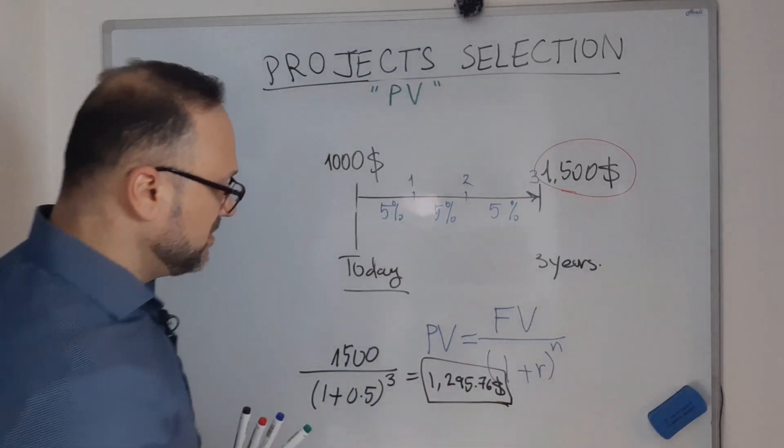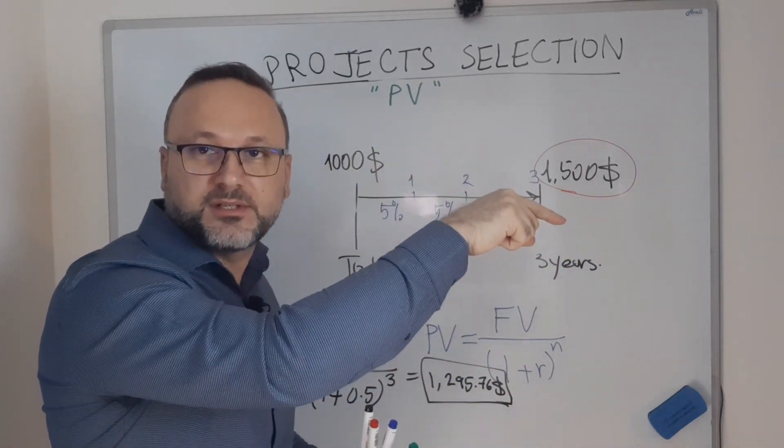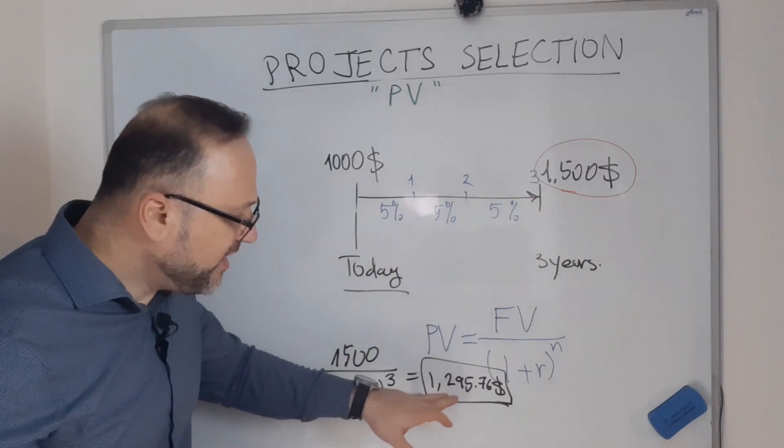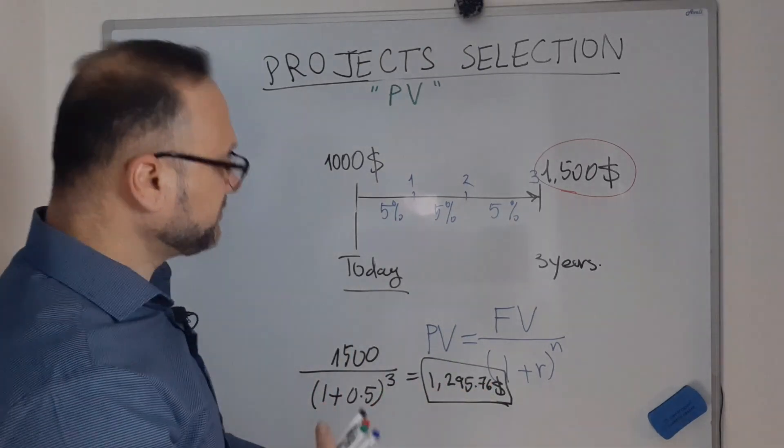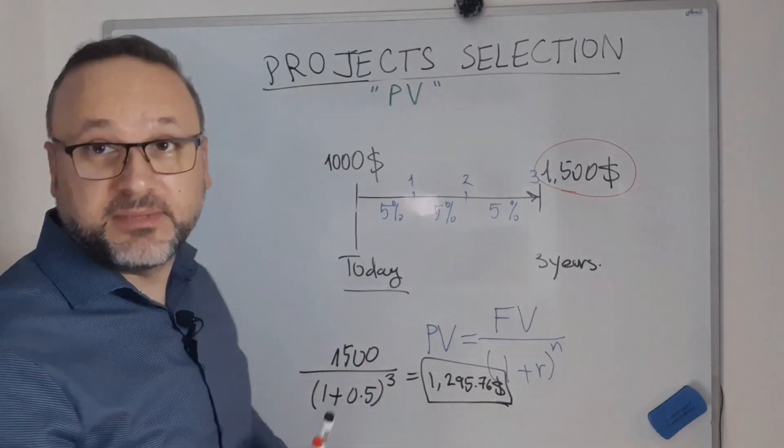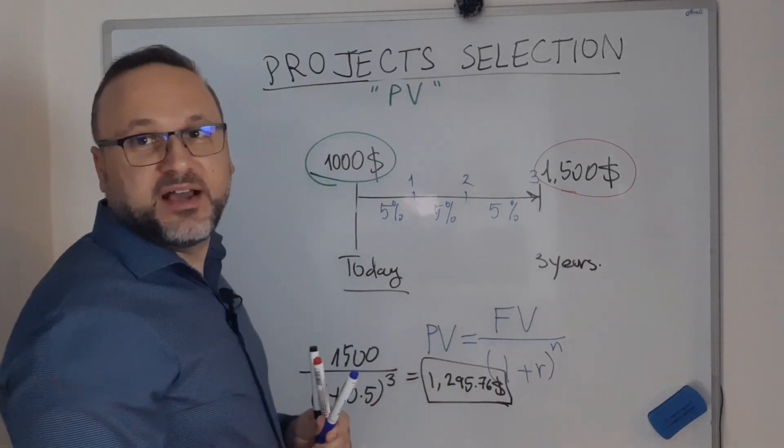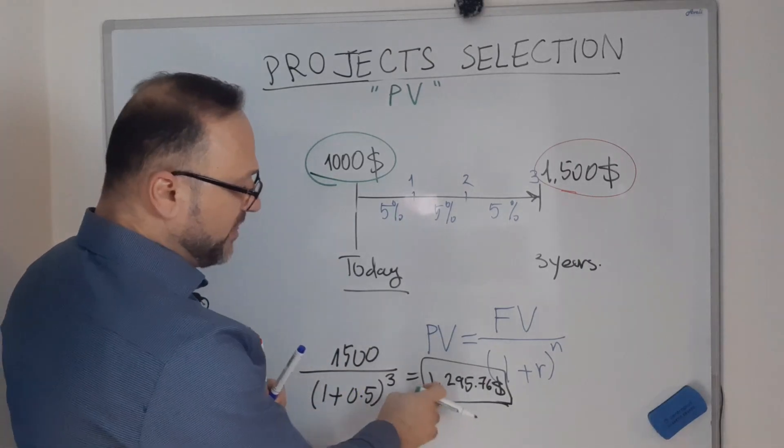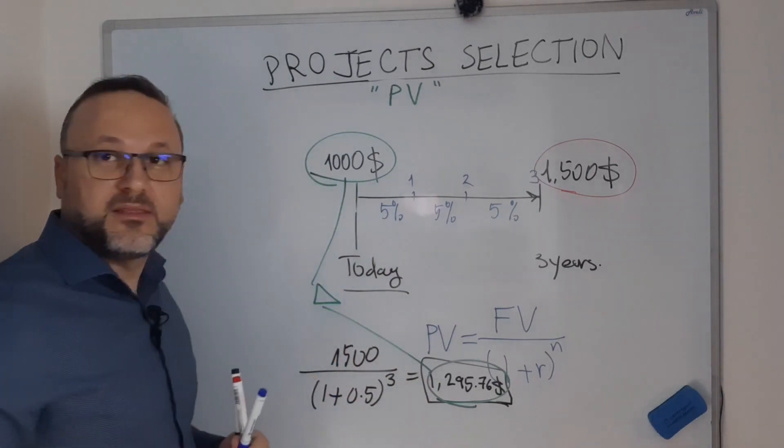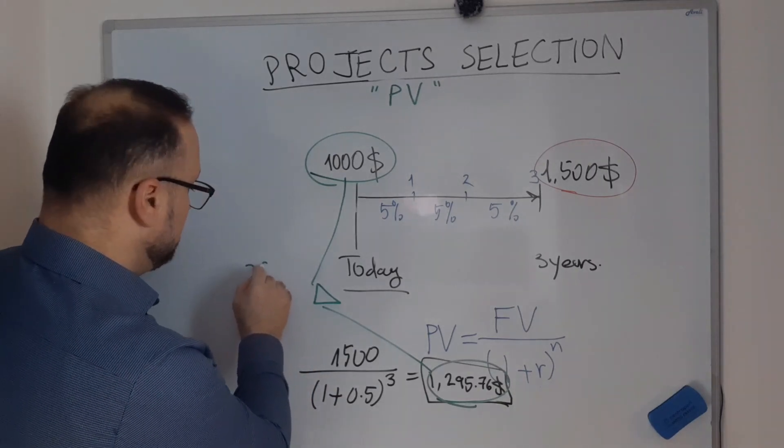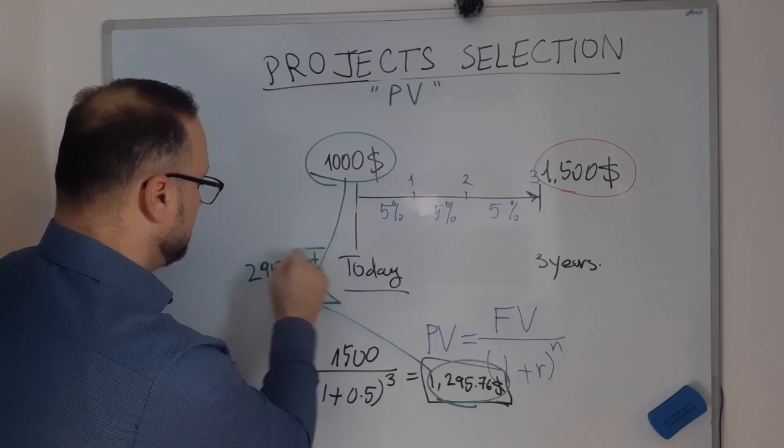In another hand, the $1,500 which I will get within three years is the same value of $1,295.76 today. So my investment today is $1,000, and the $1,500 which I am getting is valued $1,295. So if I will just make the difference, I will get $295.76 as delta.